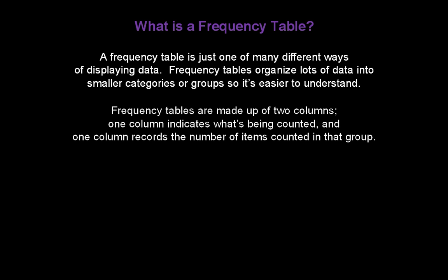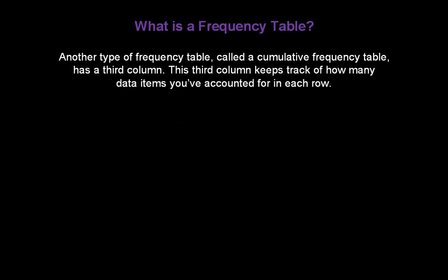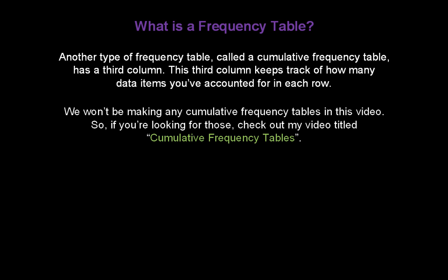Frequency tables are made up of just two columns. One column indicates what's being counted, and the other column records the number of items counted in that group. Another type, called a cumulative frequency table, has a third column that keeps track of how many data items you've accounted for in each row. We won't be making cumulative frequency tables in this video, so check out my video titled Cumulative Frequency Tables for those.